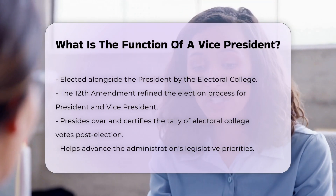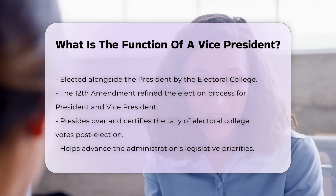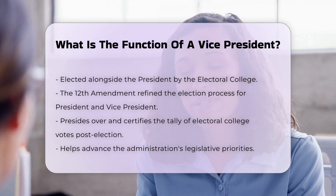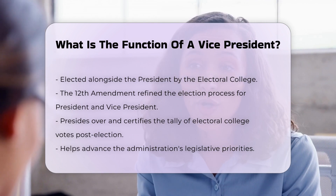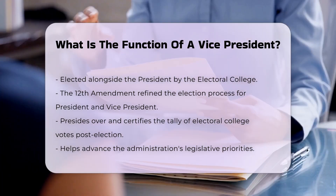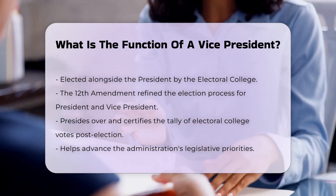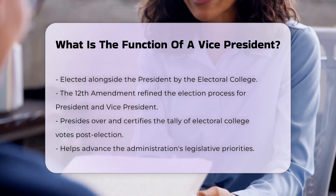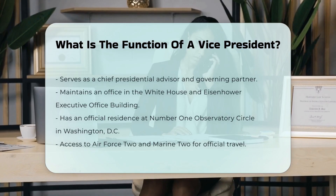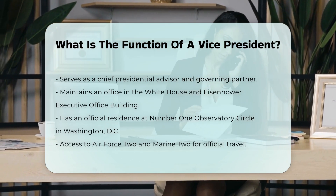Electoral College and Election. The vice president is elected along with the president by the Electoral College. Each elector casts one vote for president and another for vice president. The Twelfth Amendment refined this process, ensuring the president and vice president are elected together. The vice president also has the formal duty to preside over and certify the tally of Electoral College votes after a presidential election.